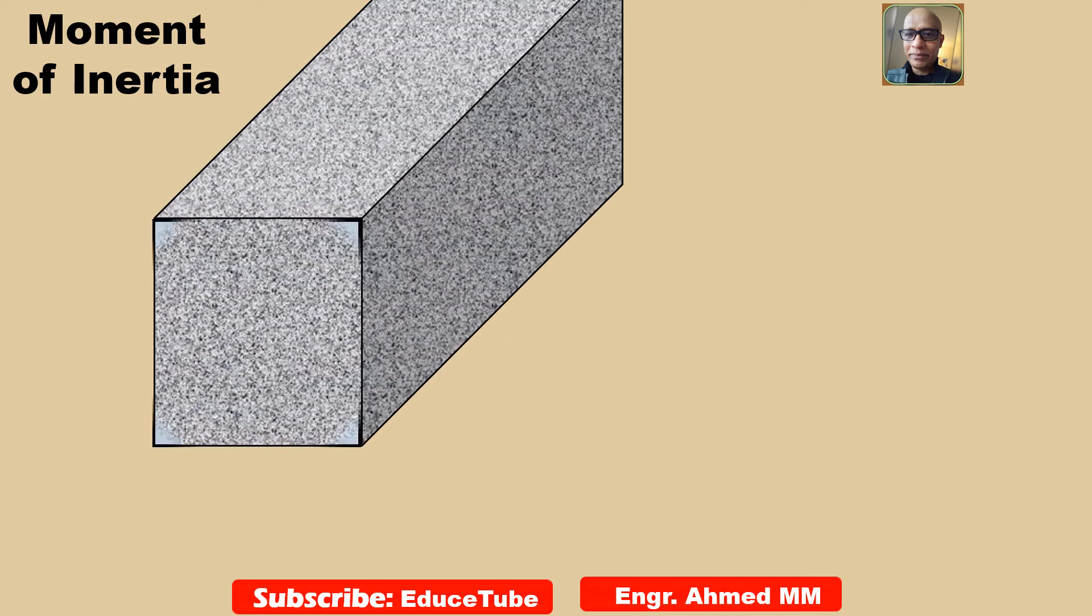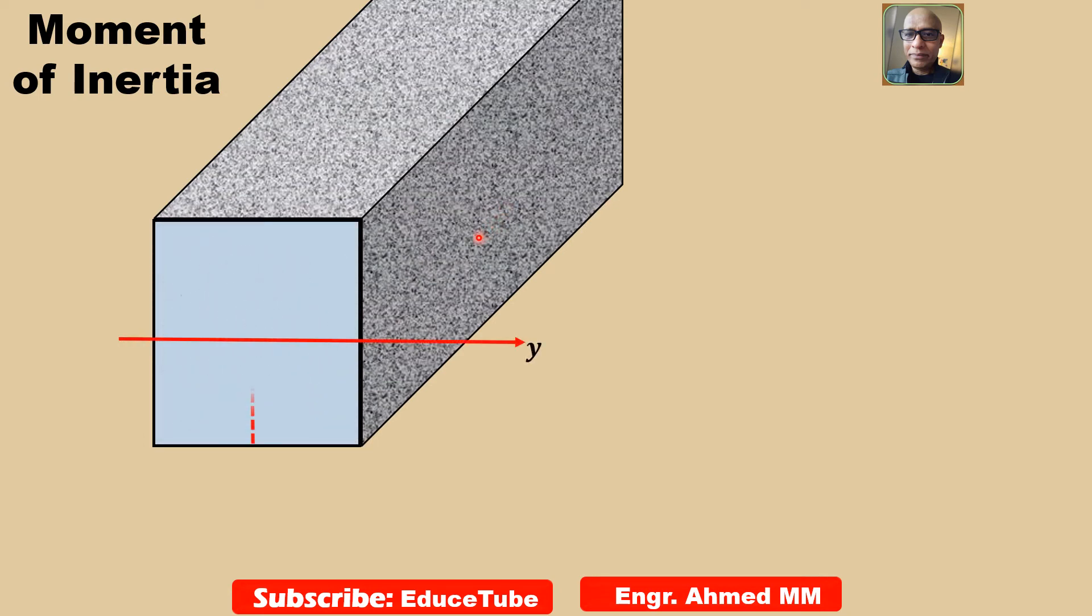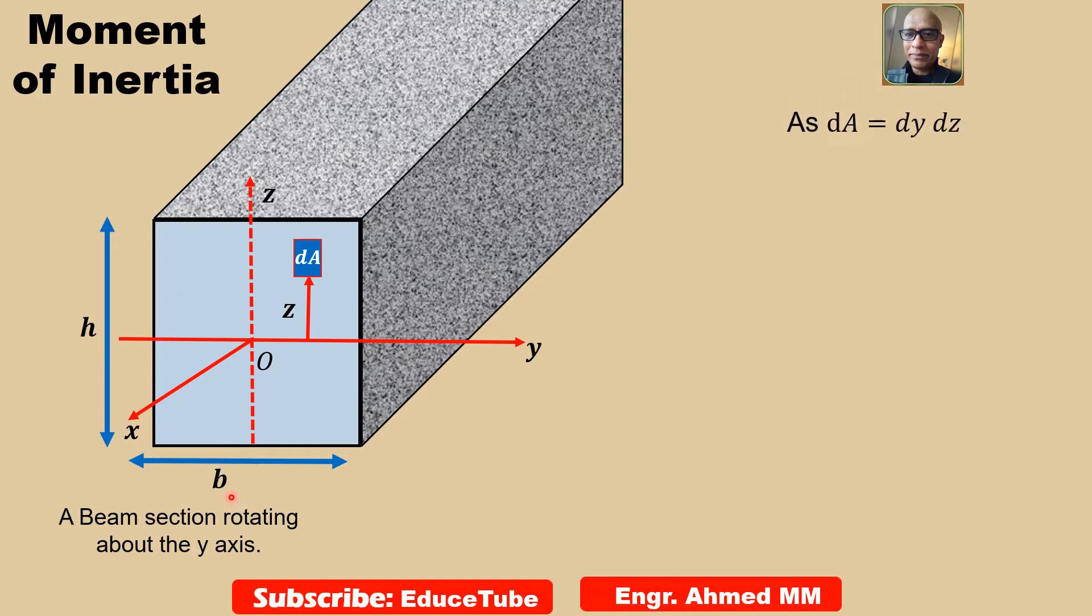A beam with a section having y-axis, x-axis on this direction along the beam, and z-axis here. So width is b, height is h. We need differential area. About y-axis, I have taken differential area dA at a distance z from y-axis. So dA easily we can write dy dz.